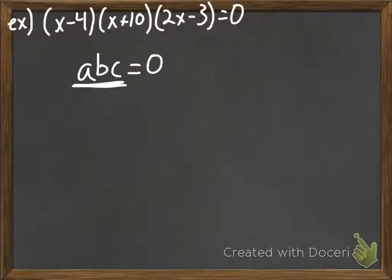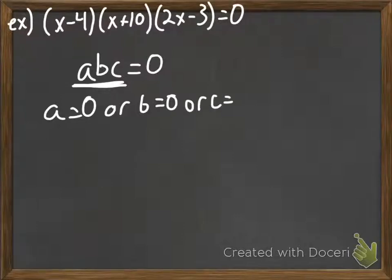The zero product property still works if you have three things. So, here we have a, b, and c equals zero. We still know that a equals zero, or b equals zero, or c equals zero. So, the zero product property works no matter how many factors you have here. You can have three, you can have four.